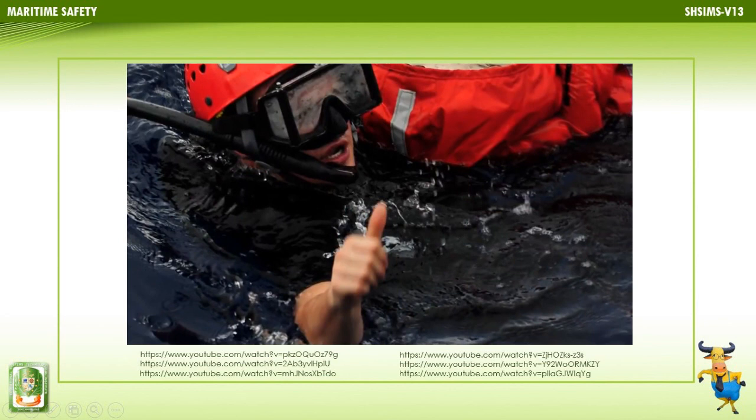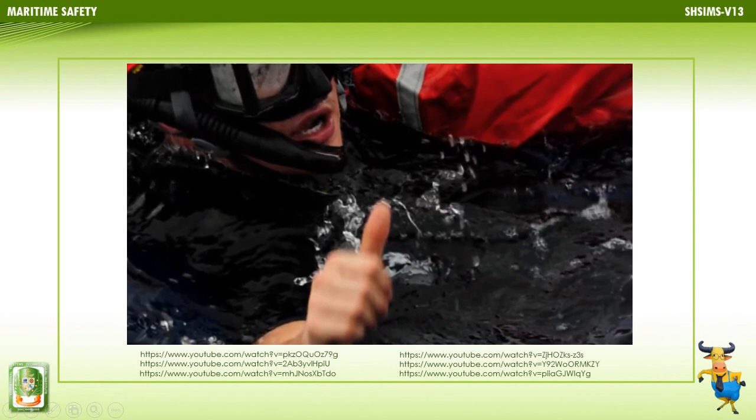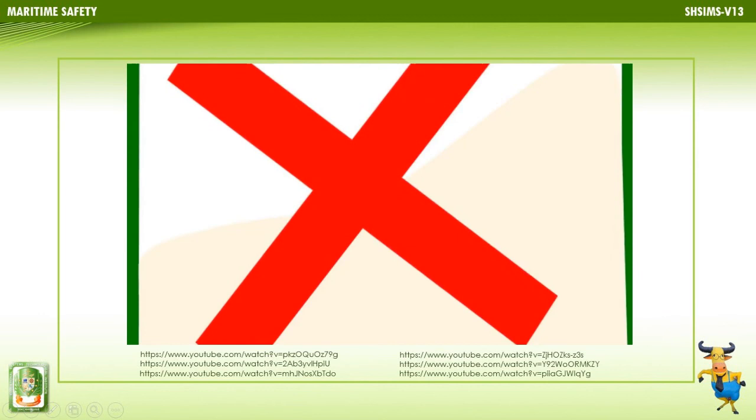Having sighted the man overboard and assessed the situation, the skipper or crew in charge will allocate positions to the crew and brief them on appropriate recovery actions. After rescuing the man overboard, cancel any distress call, continue to monitor the patient's condition (ABCs), and treat for shock as required. Complete the necessary unit and maritime forms as required for a man overboard incident.